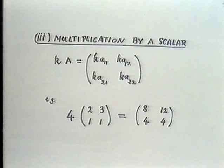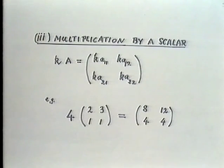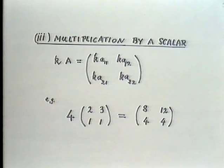The next point is how to multiply a matrix by an ordinary real number. This is done by the following rule: if k is the number in question, then k times the matrix A is a matrix whose coefficients are k·a11, k·a12, and so on. In other words, we multiply a matrix by a number by multiplying each of its coefficients by that number. For example, four times the matrix [2,3,1,1] is the matrix with coefficients [8,12,4,4].